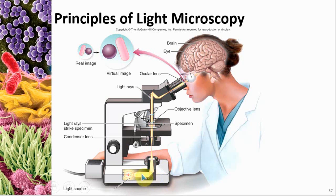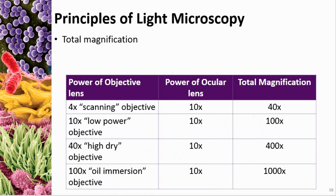The light rays get bent and bounced off mirrors, and bent one last time when they hit the ocular lens. The real image is magnified so it's big enough to be seen with the naked eye. When the image hits your eye, that is called total magnification. We calculate it by multiplying each lens together. Most microscopes have four objective lenses: 4×, 10×, 40×, and 100×. The ocular lens is always 10×. So total magnification ranges from 40× up to 1,000×.